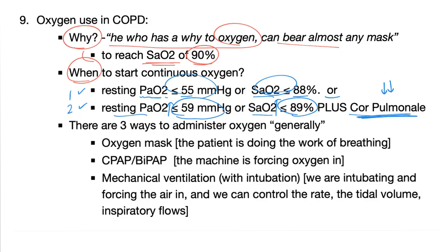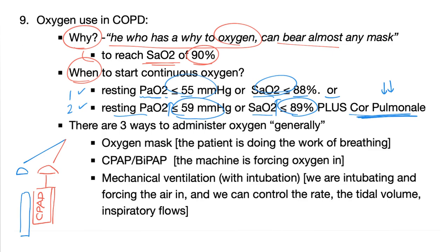There are three ways to administer oxygen. First: the oxygen mask — the patient breathes spontaneously while connected to an oxygen source. Second: the same mask connected to a CPAP or BiPAP machine, which forces oxygen into the patient's airway — continuous positive airway pressure, since normally intrapleural pressure is negative, this creates positive pressure.